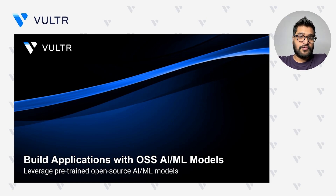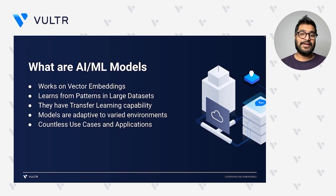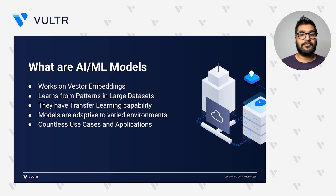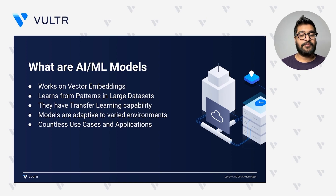Today we are going to discuss how you can leverage open source AI/ML models for building applications. AI and ML models are like smart tools that can predict outputs to a prompt by learning the patterns in the given data set. They are based on vector embeddings, which means they map words and phrases with numbers so that a machine can understand them. These models are capable of utilizing knowledge from pre-trained models to solve new or related tasks, and they are also adaptive.